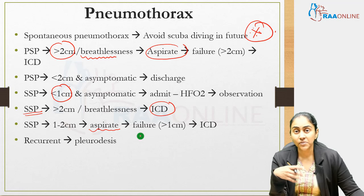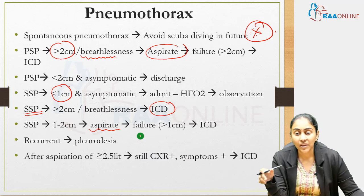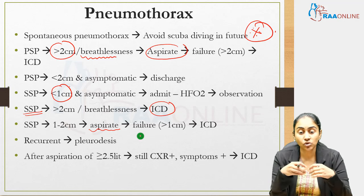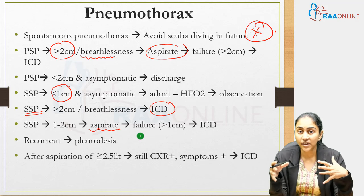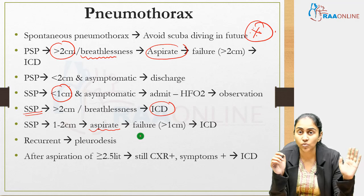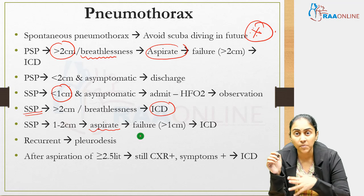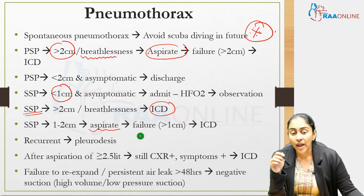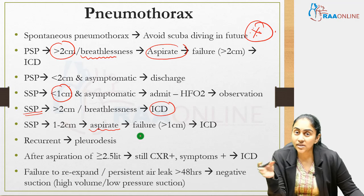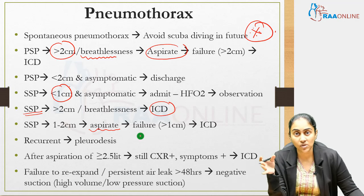For recurrent pneumothorax, opt for pleurodesis. If after aspiration of 2.5 litres the chest X-ray still shows pneumothorax above the threshold (more than two centimetres for primary, more than one centimetre for secondary) or the patient remains symptomatic, proceed to ICD. If despite ICD there is failure to re-expand or persistent air leak beyond 48 hours, offer negative suction — high-volume, low-pressure suction.